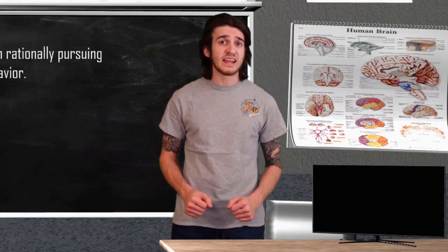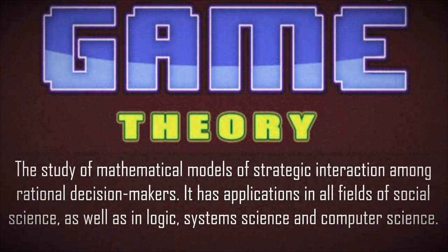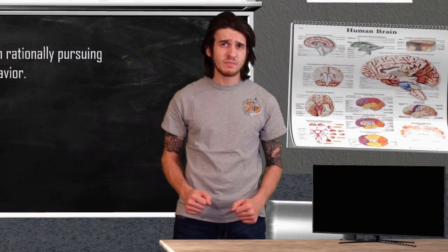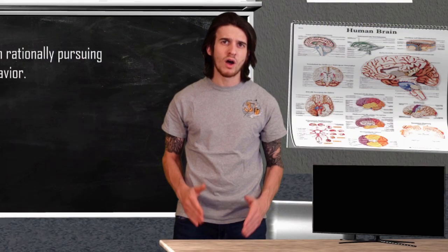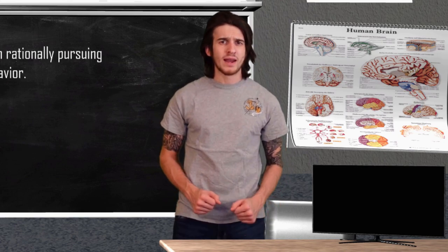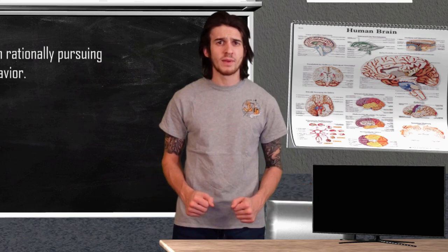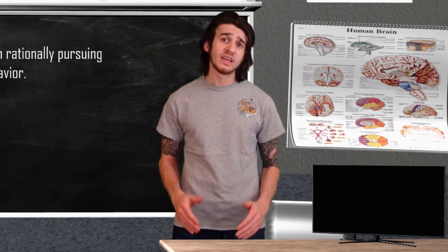The prisoner's dilemma is a standard example of game theory, showing us why two completely rational individuals might not cooperate. Game theory is a mathematical model of strategic interaction between rational decision makers. While it is centered around mathematics, its uses are very practical in several social science fields, including psychology. In the 1950s, two prominent mathematicians, Meryl M. Flood and Melvin Drescher, started to apply game theory to the prisoner's dilemma.